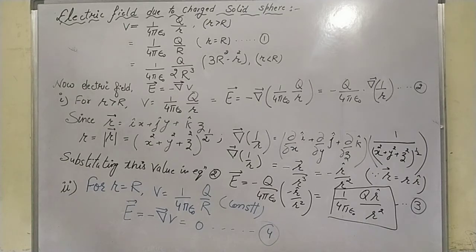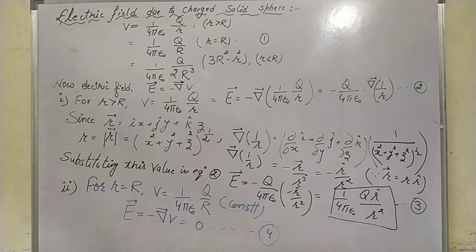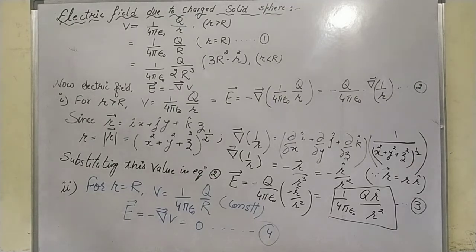Simplifying the gradient of 1/r with components in x, y, z, and performing differentiation, we get −r/r³ or equivalently −r̂/r². Substituting this value into the equation, we get E = −q/(4πε₀) × (−r̂/r²) = 1/(4πε₀) × q·r̂/r². This is equation number 3.